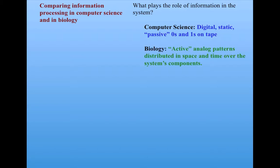However, in biology, information is no longer digital or static. It's active and analog, in the sense that it's not necessarily made up of ones and zeros. It's distributed in space and time over the system's components. Information in biology is represented via patterns of individuals and their products. For example, you can think of the ants and their trails as representing information about the sources of food and their locations, or the flocking of birds or the schooling of fish as being the kinds of patterns that represent information in the system.